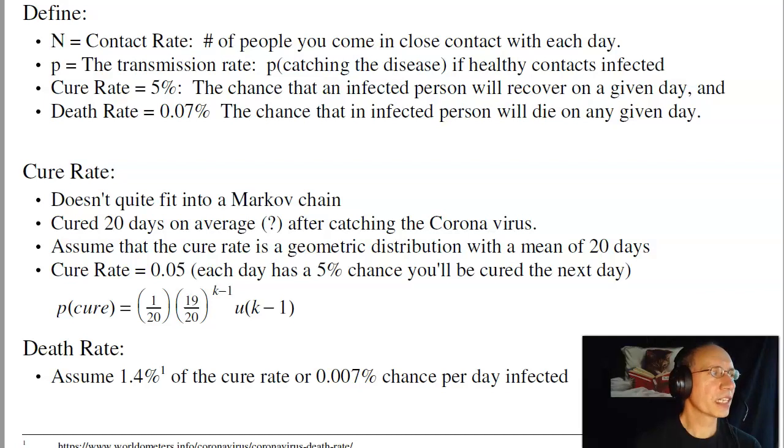The cure rate, again, is kind of a wild guess. I'm going to assume 5%. The reason for that is it appears that about 20 days after catching the coronavirus, you're cured. That means that you have history, and Markov chains don't allow you to know more about the past than the present. So I'll model that by saying the cure rate is exponential in nature, so that the average cure time is 20 days, and the probability of being cured is 1/20th.